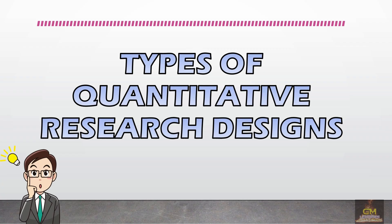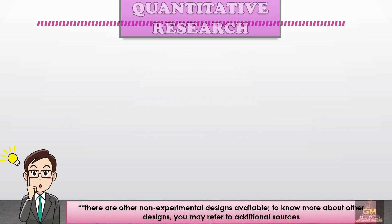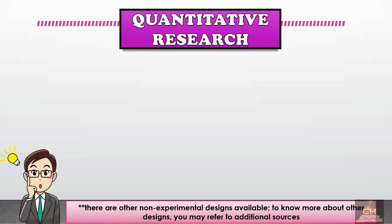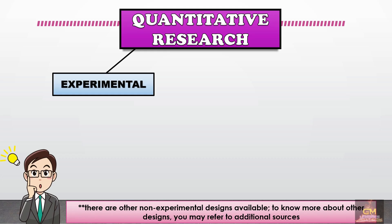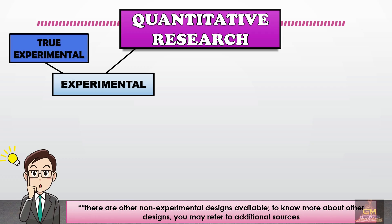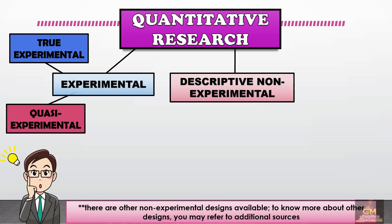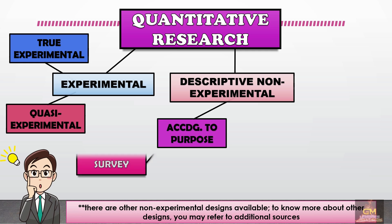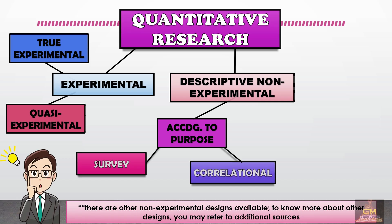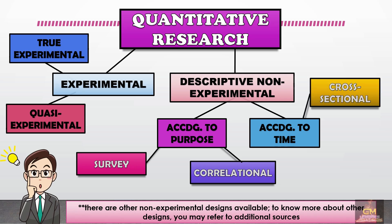Good day everyone! Today we're going to be discussing the different types of quantitative research designs. To give you an overview, quantitative research is divided into two major types. The first one is experimental research, which is subdivided into true experimental and quasi-experimental, while the other one is descriptive non-experimental, further classified according to purpose — survey research and correlational research — and according to time dimension, with examples such as cross-sectional research and longitudinal research.